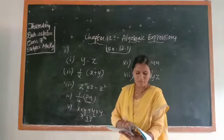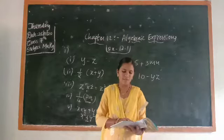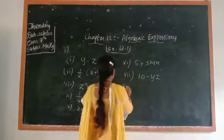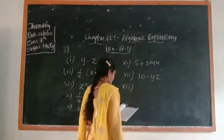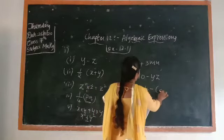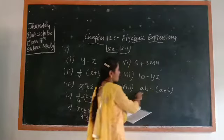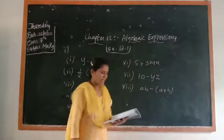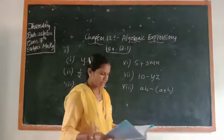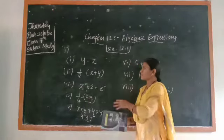The eighth question: sum of numbers a and b subtracted from the product of a and b. Sum of a and b is (a + b), which is subtracted from the product ab. The expression is ab − (a + b). Total eight questions, and you have to write them in expression form.